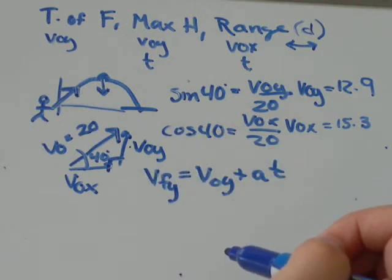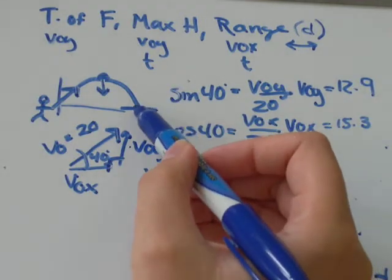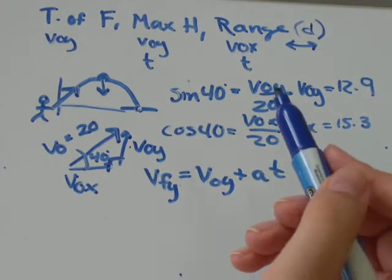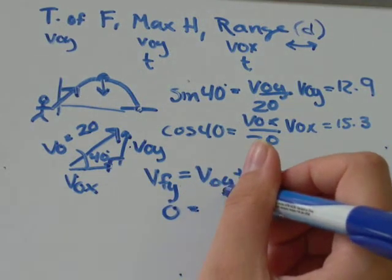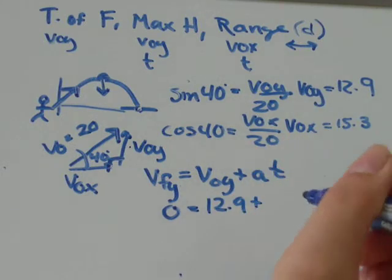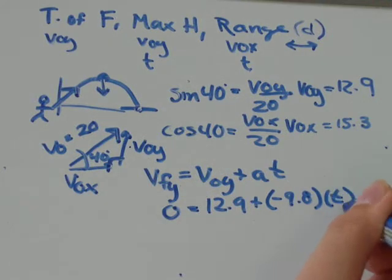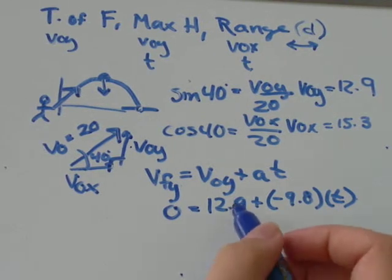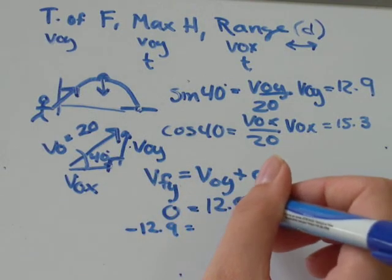When the ball is at the end of its journey, when it hits the ground over here, it comes to a stop. So, the final velocity is going to be 0. The initial velocity in the y direction was 12.9, plus the acceleration is gravity, negative 9.8, and the time, we don't know. The first thing I'll do is subtract 12.9 from both sides. So, I'll get negative 12.9 over here.